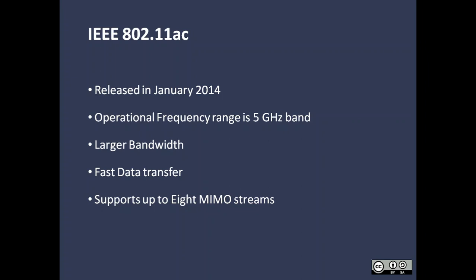802.11 N supports 4 MIMO streams, but 802.11 AC supports 8 MIMO streams and has a theoretical throughput of up to 7 Gbps.